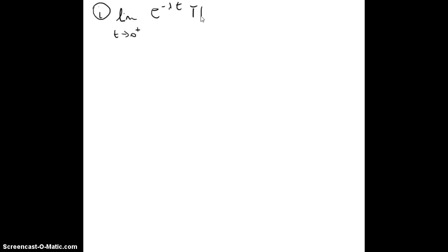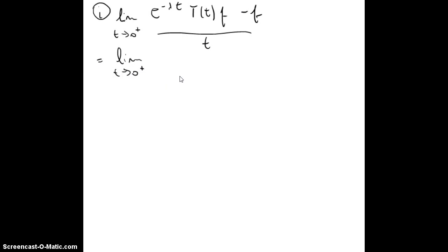If we want to know the generator, we will take the limit when t goes to 0 plus of e^{-lambda t} T(t)f minus f over t. This will be equal to the limit when t goes to 0 plus, and here we will be using L'Hôpital's rule.